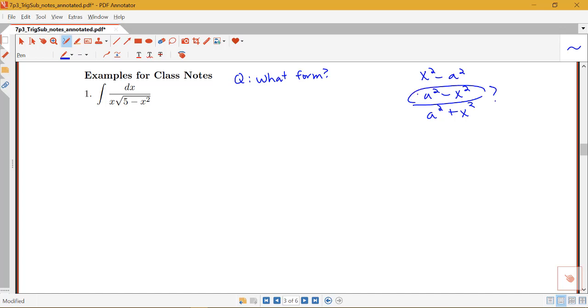Remember, that's the one where a sine substitution is going to be helpful, because that's connected to our 1 minus sine squared equals cosine squared identity.